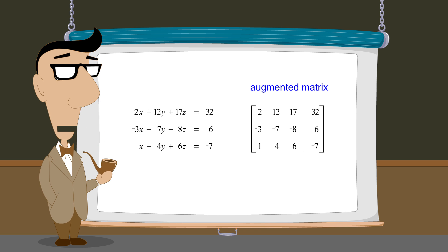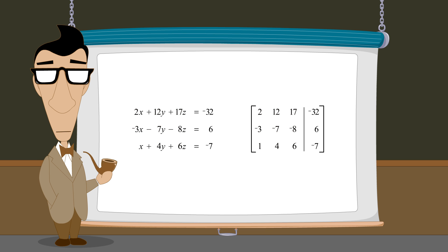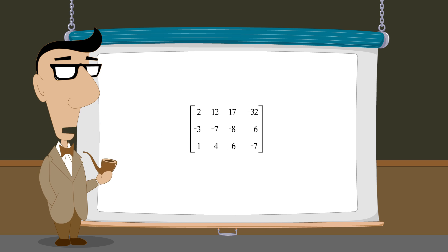When working with an augmented matrix, it is important to keep in mind that the entries which lie to the left of the vertical line are the equation's variable coefficients, and that the entries to the right of the vertical line are the equation's constants. We will therefore refer to the entries on the left as the coefficient entries and the entries on the right as the constant entries.